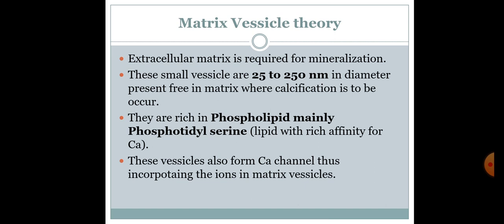Matrix vesicle theory: Extracellular matrix is required for mineralization. Small vesicles, 25 to 250 nanometers in diameter, are present in the matrix where calcification is to occur. They are rich in phospholipid, mainly phosphatidylserine, which is a lipid with a high affinity for calcium. These vesicles also form a calcium channel, thus incorporating ions into the matrix vesicles.